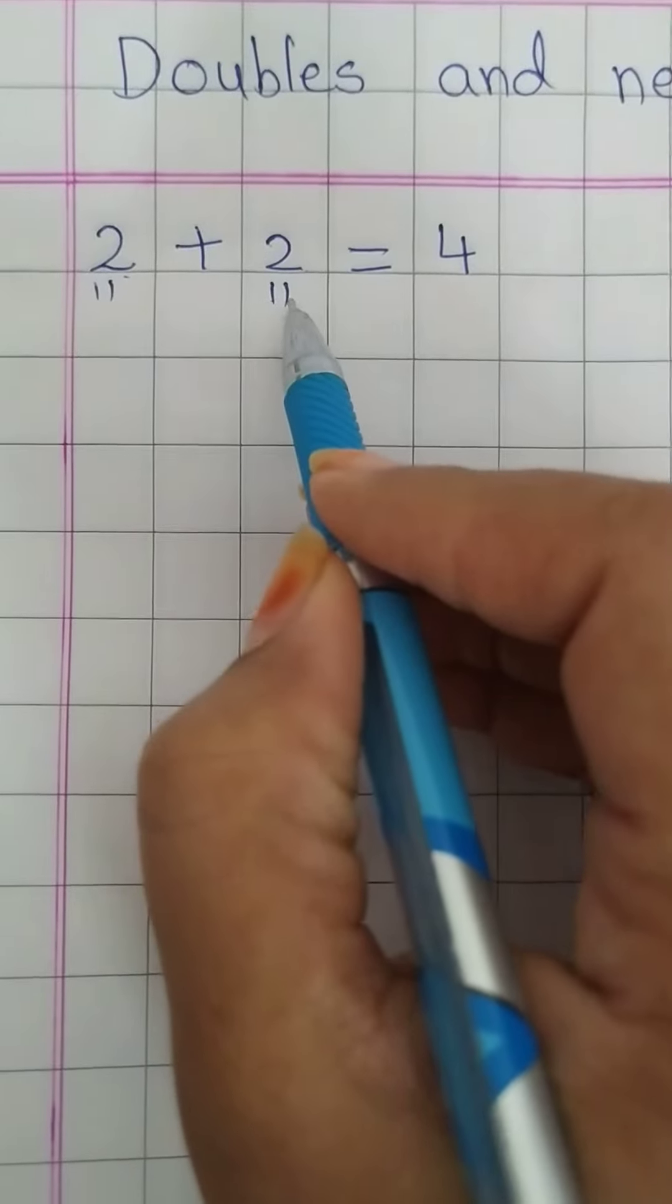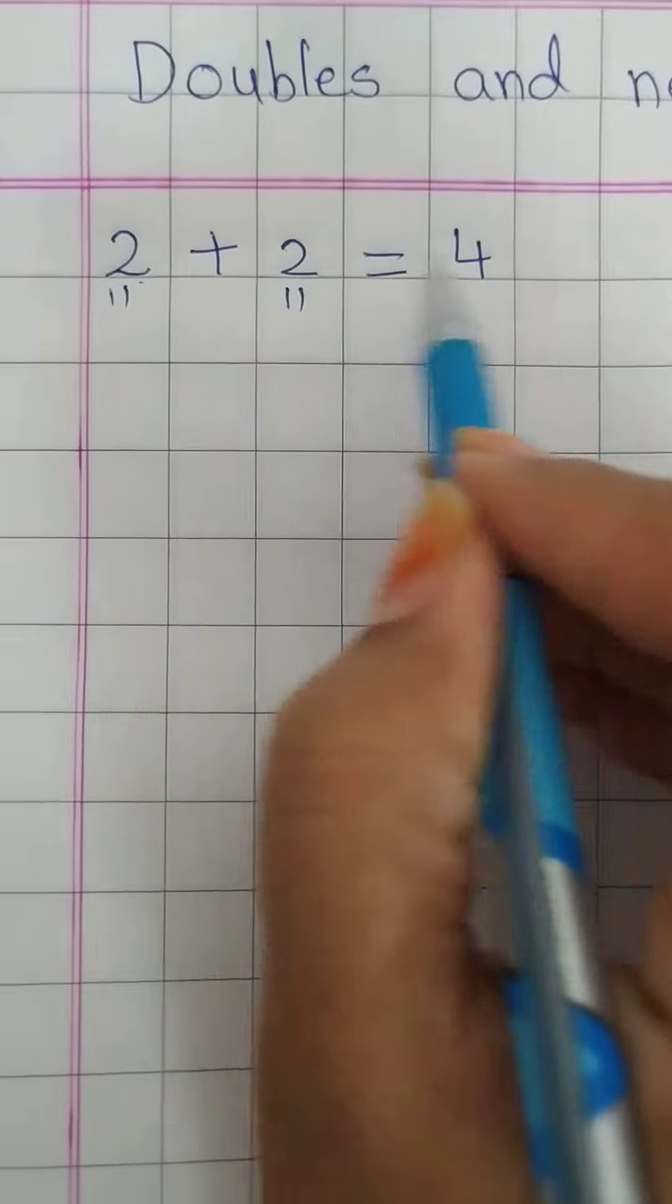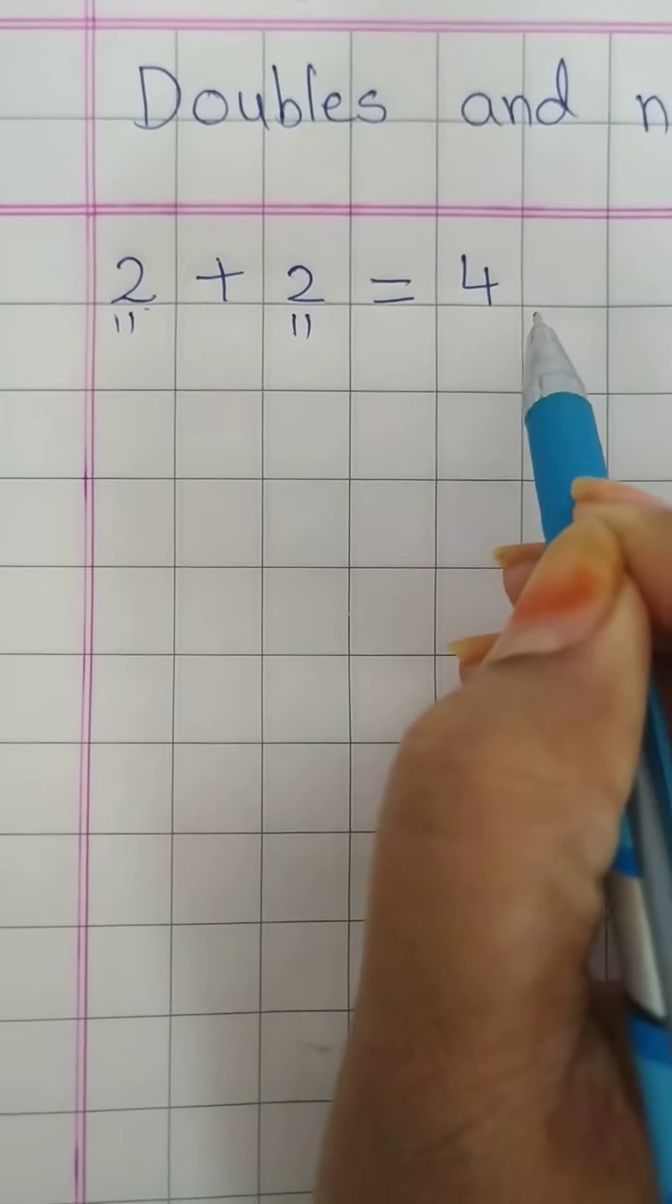1, 2, 1, 2. 1, 2, 3, 4. Altogether 4. 2 plus 2 is equal to 4.